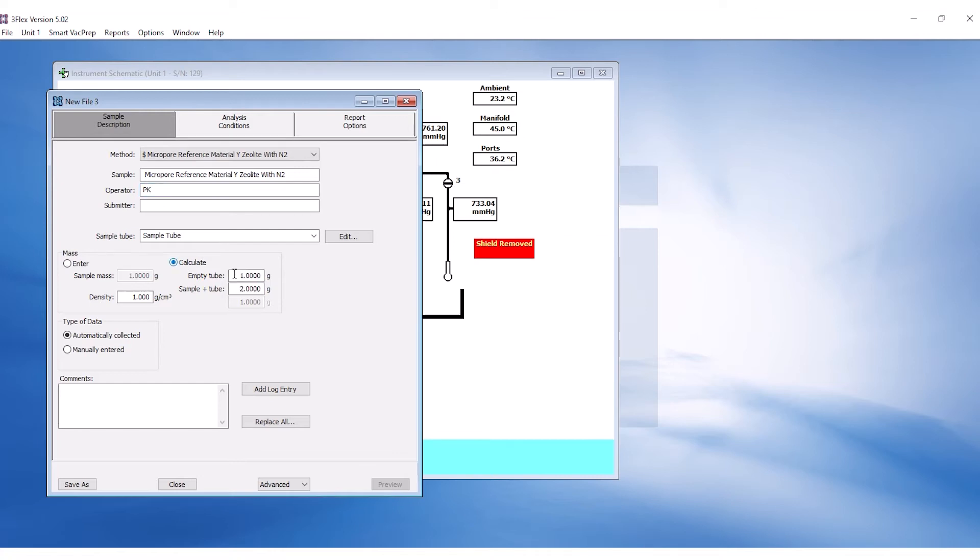The before degas mass can be entered for sample plus tube mass when creating the sample file, but ensure to change the sample plus tube mass after analysis after re-weighing at the end of the experiment.